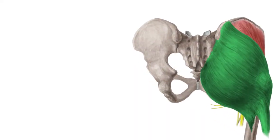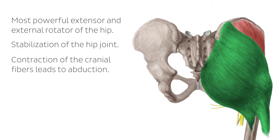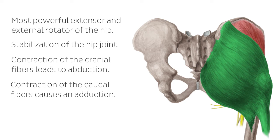The gluteus maximus muscle is the most powerful extensor and external rotator of the hip. It also supports the stabilization of the hip joint. The contraction of the cranial fibers leads to abduction, whereas the contraction of the caudal fibers causes adduction. The iliotibial tract enhances the lateral thigh fascia and thus relieves the pressure of the femur, also known as the tension band principle.